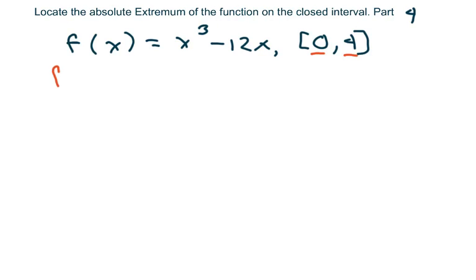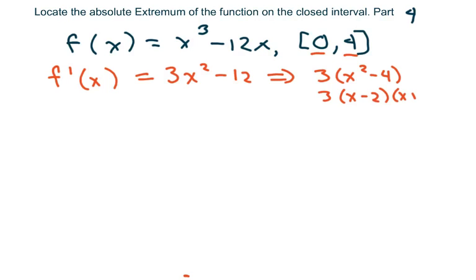But I first want to find if there's any critical numbers, because they could be our absolute extremum as well. So I'm going to take the derivative, and when I factor this, I'm going to pull out a 3. We know this is x minus 2 times x plus 2, and we're going to set this to 0.